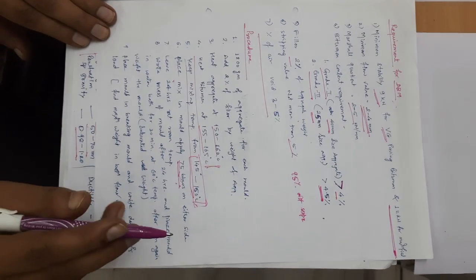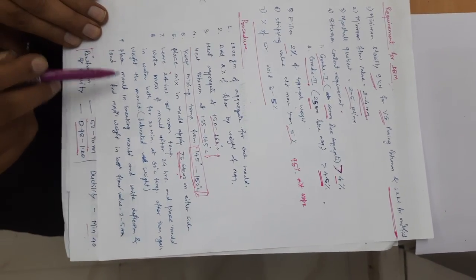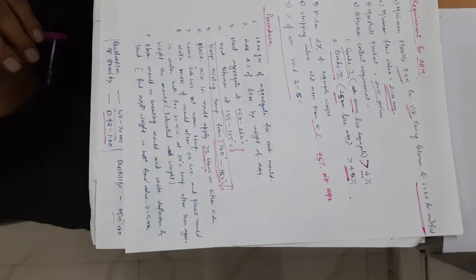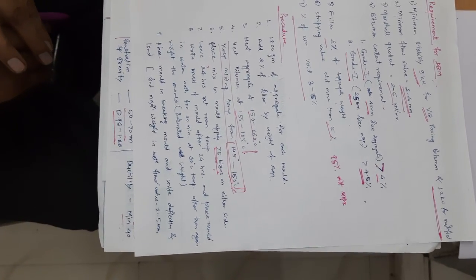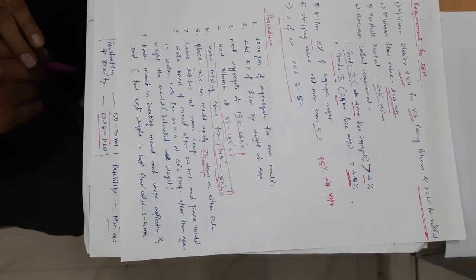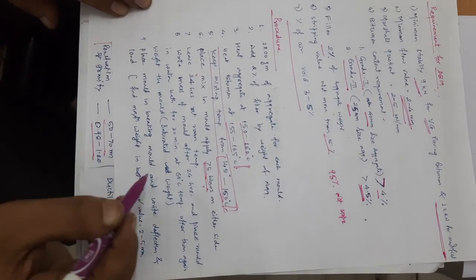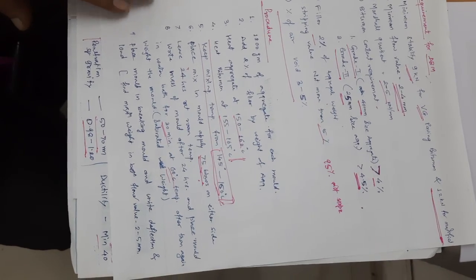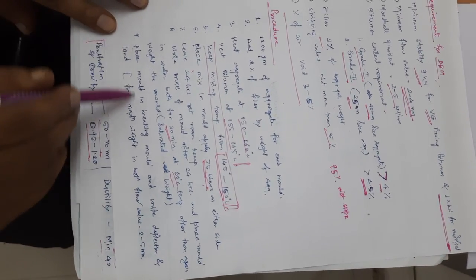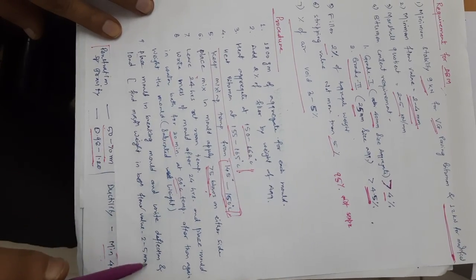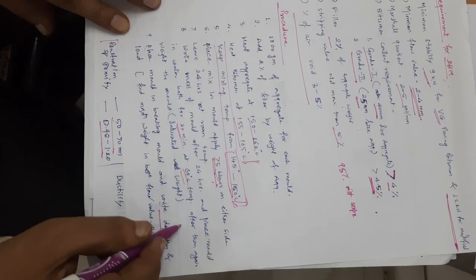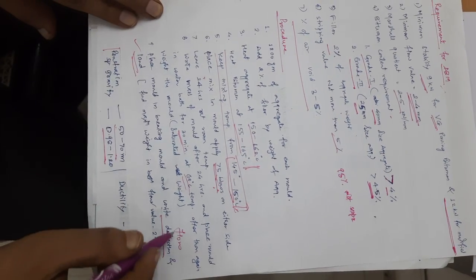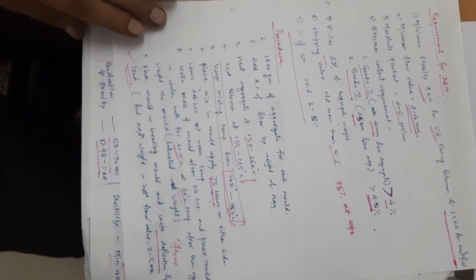We have to apply 75 blows on either side of the sample so it will be fully compacted. Then we keep it for 24 hours at room temperature. After that, we take the masses of the sample — dry weight, then we take the saturated weight by keeping the mould in a water bath at 60 degrees centigrade for 30 minutes. After 30 minutes, we take the weight, which is called the saturated surface dry weight. Then we place the mould in the breaking head and find out the deflection (called flow) and the load from the machine. At maximum load, how much flow is there — that is found using the Marshall Stability Machine.